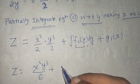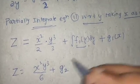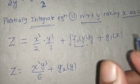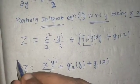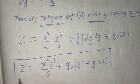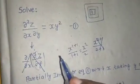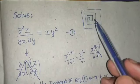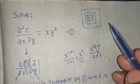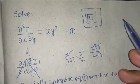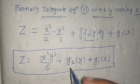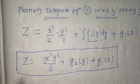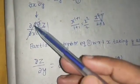So Z equals X squared Y cubed divided by 6, plus let's name the Y-only function as G2(Y) — you can name it G1 also — plus G1(X). This is your final answer: Z equals X squared Y cubed divided by 6, plus G2(Y) plus G1(X). We have revealed what Z is equal to by unwrapping the gift two times.